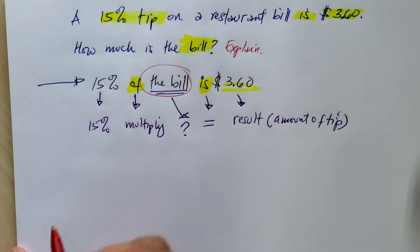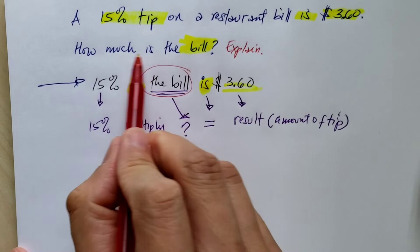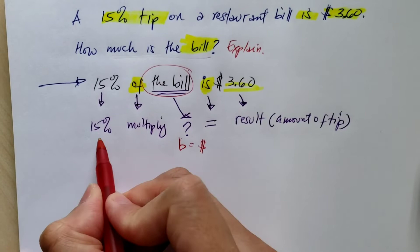So that means B for bill is the amount, the dollar amount that we do not know.